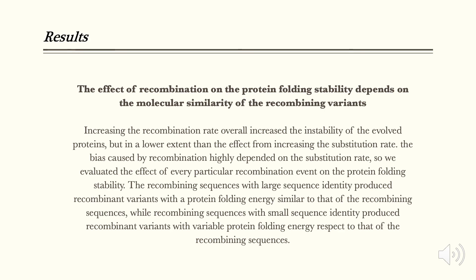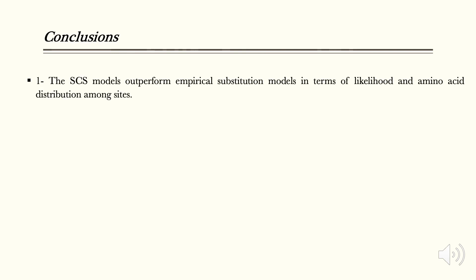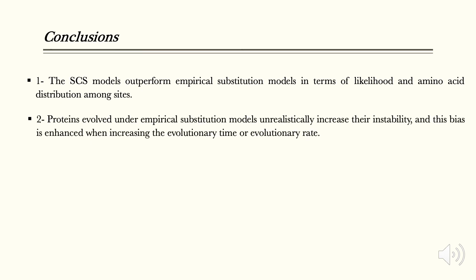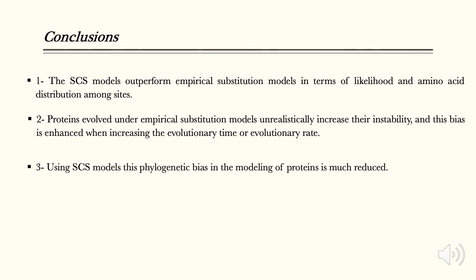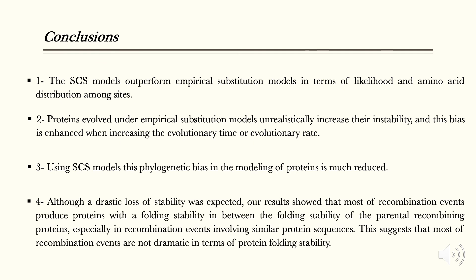Once the experiments were finished, the following conclusions were drawn. The SCS models outperform empirical substitution models. Proteins evolved under empirical substitution models unrealistically increase their instability. Using SCS models, this phylogenetic bias in the modeling of proteins is much reduced. And recombination events produce proteins with a folding stability between the folding stability of the parental recombining proteins.